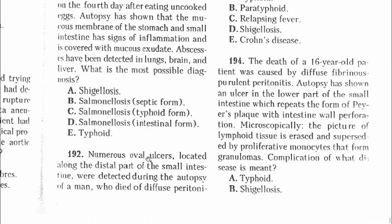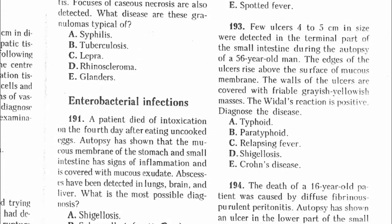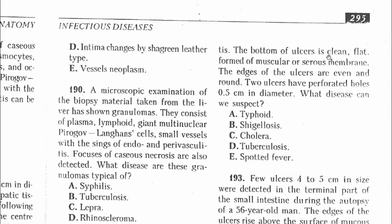Question 192: Numerous oval ulcers located along the distal part of the small intestine were detected during autopsy of a man who died of diffuse peritonitis. The bottom of the ulcers is clean; flat form of muscular or serous membrane; edges are even and round; two ulcers have perforated. This is definitely talking about typhoid fever. Salmonella typhi has a very high perforation power; the ulcers are also located in the terminal part of the intestine. The answer is A — typhoid fever.